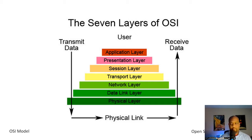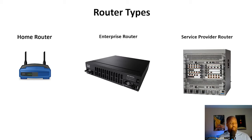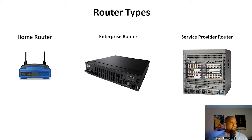Contextually, the type of router you encounter varies by setting. At home or in a small office, you might see a small, compact router with multiple functions — it may do more than just routing, perhaps having a built-in switch, supporting both wired and wireless connections. That's very common for home routers — compacting a bunch of functions in addition to traditional routing.